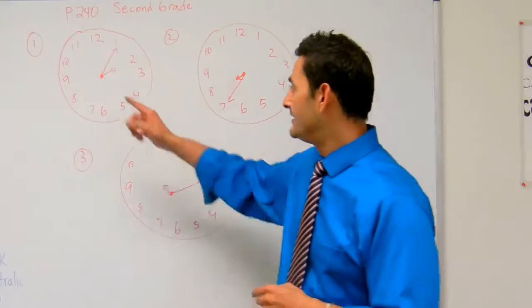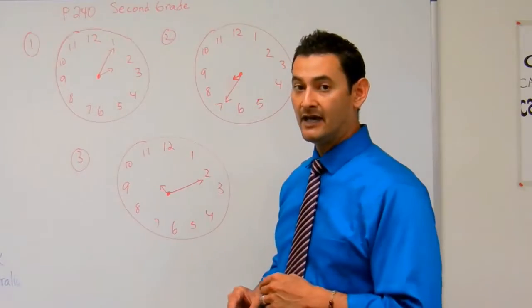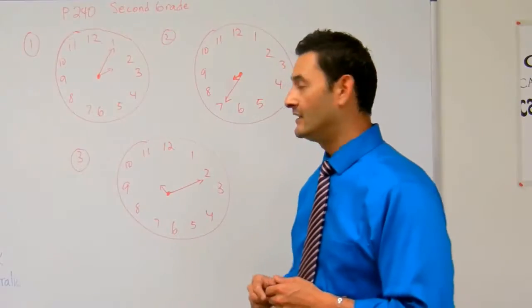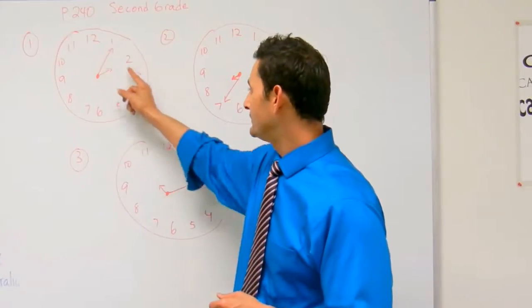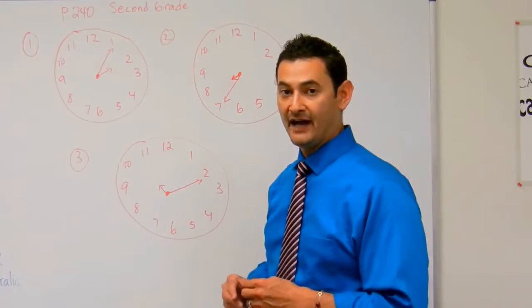Let me remind you again, the small hand on the analog clock is the hour, the big hand on the analog clock are the minutes. And each one of these is counting out by fives.